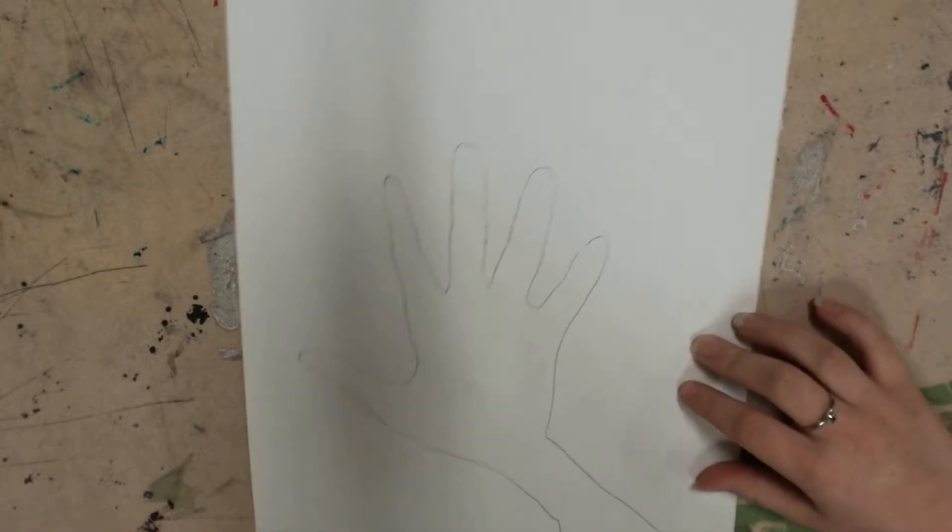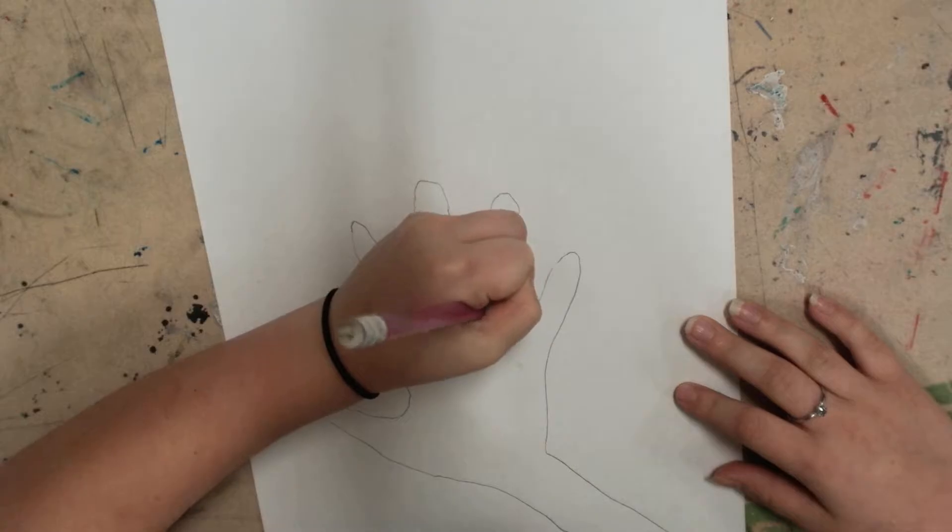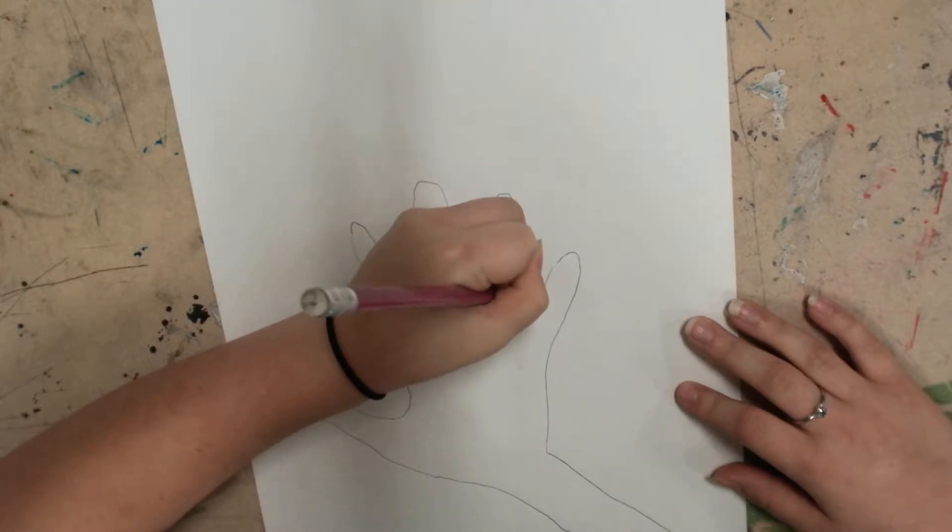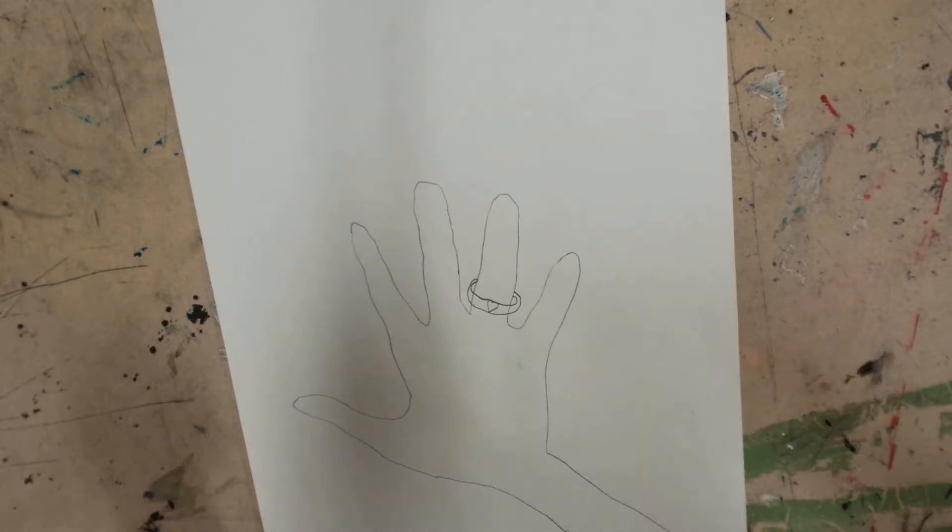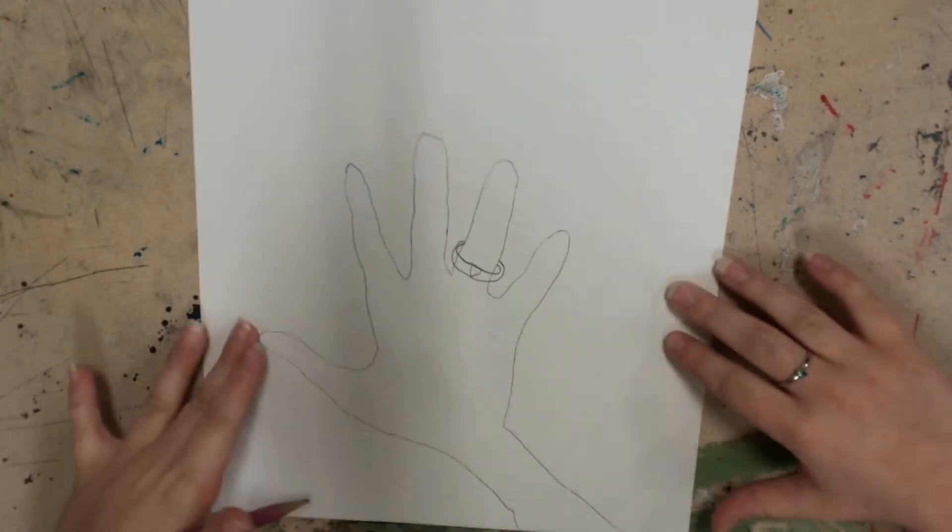Once you've traced your hands, you can go over here and make a ring. And you can add some bracelets, whatever designs.